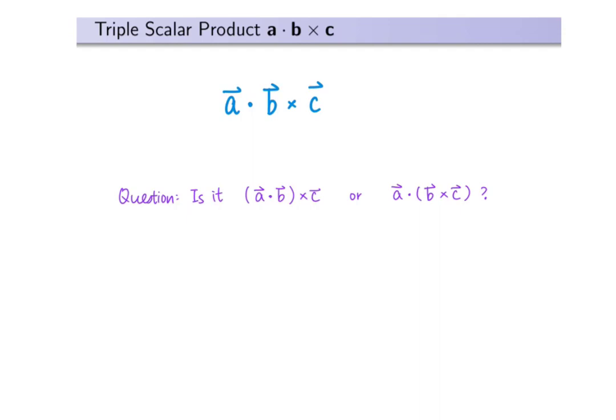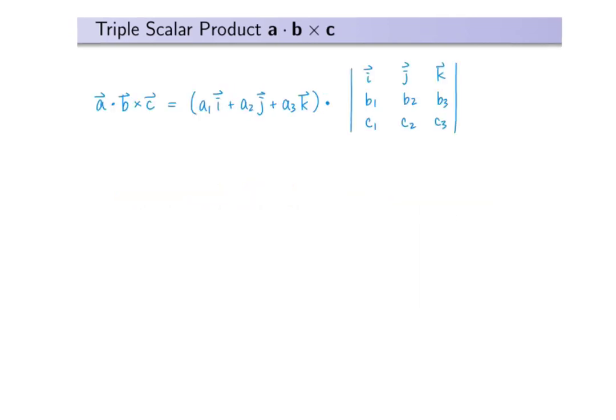For the second expression, B cross C gives a vector. Then we can perform dot products of vector A with this new vector, so it's valid. Therefore, even without writing a bracket, A dot B cross C is to perform a dot product of vector A with a vector formed from B cross C using this formula. The result is a scalar, so it is called triple scalar product.